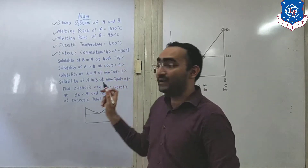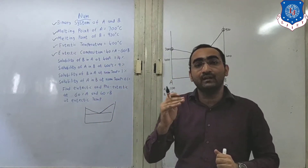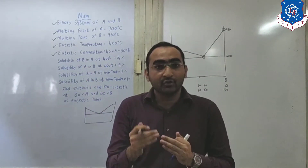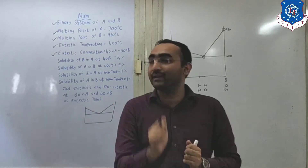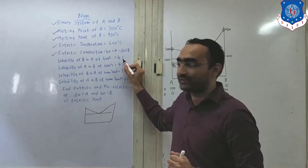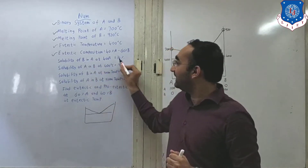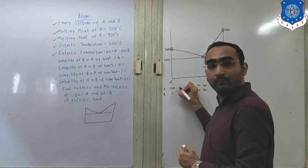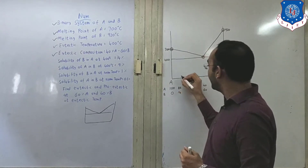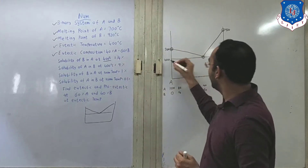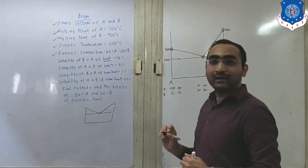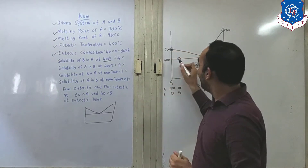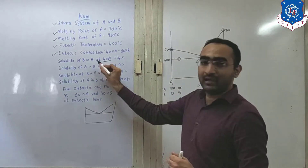The solubility of B in A at 400 degrees Celsius. Make sure which material is added in which — the solubility of B means B is dissolved in A. So A is in a major quantity and B is in the minor quantity. The minor quantity is 14%. So what will be the percentage of B? That is 14. Where does B14 come? Over here somewhere. What will be the other composition of A? That is 86, where at 400 degrees Celsius. Mark one point — that is 86, 40. Mark that point. This is the solubility of the material, that is B in A.